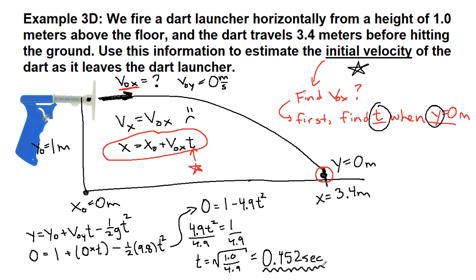All right, so we're not quite finished with the problem. We know that the reason why we found t was so that we could use the xt equation. So now we'll rewrite that just so it's right where we're about to plug stuff in. The final x is 3.4. The initial x is 0. I'm going to save myself a step and just get rid of it.